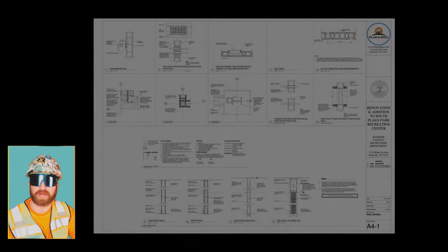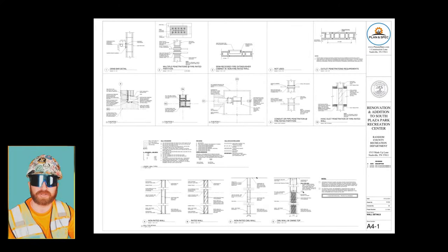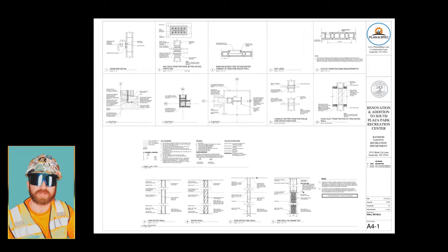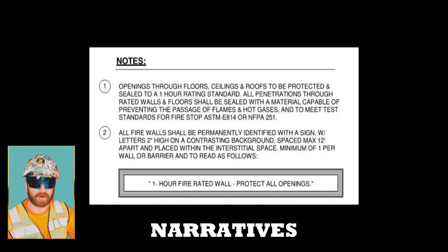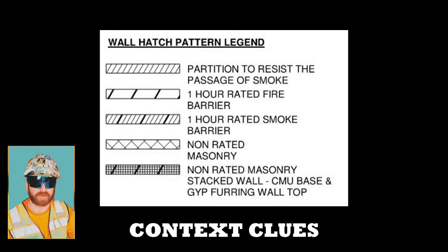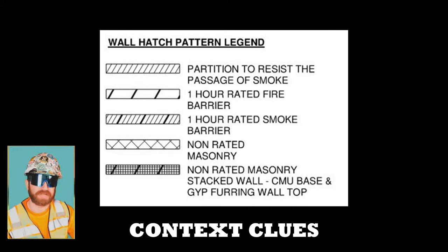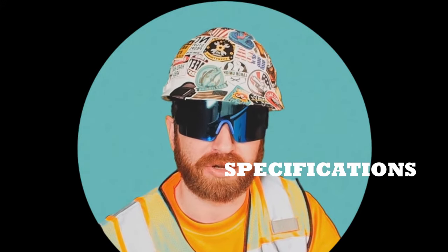Now that we know about drawing sheets, page titles, and navigating to certain sections like the architectural or structural set, let's talk about what's actually on the drawing page. The drawing page may contain smaller drawings, which we refer to as details. There can also be narratives and other context clues with symbols relating back to these drawings that help us understand the intent of the detail and how we're supposed to build the building. These details, narratives, and context clues may also lead us back to the specifications — another critical document when building a building.